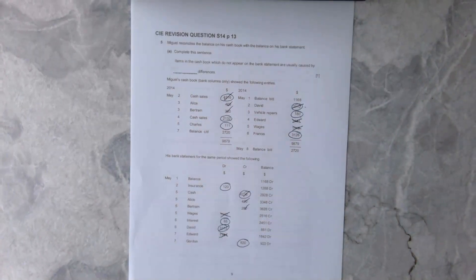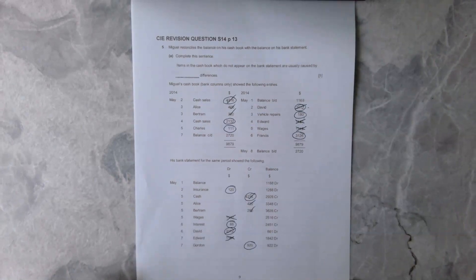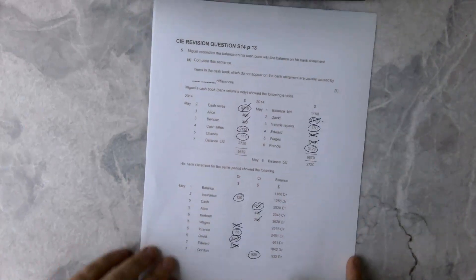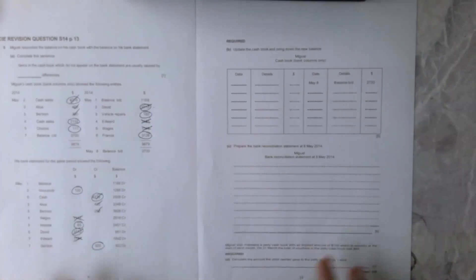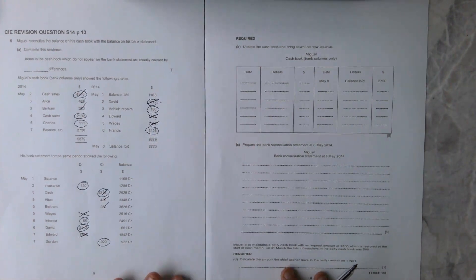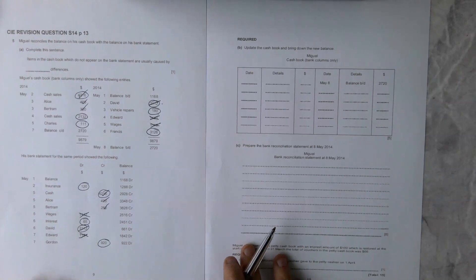We've also got insurance not there and the 65. So we've got two on the debit side, one on the credit side, and the bank statement that do not match. We're going to push this over to the left hand side and have a look at what it's asking us on the right hand side.